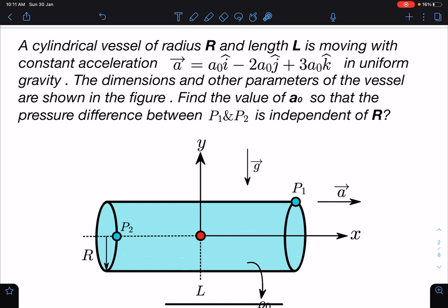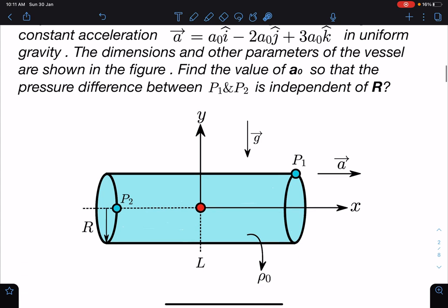As shown in the figure, the dimensions and other parameters of the vessel are shown in the figure. Find the value of a₀ so that the pressure difference between P₁ and P₂ is independent of R. So guys, here is the situation and you can see...